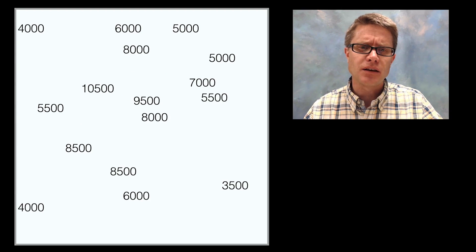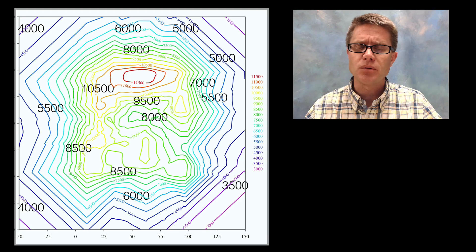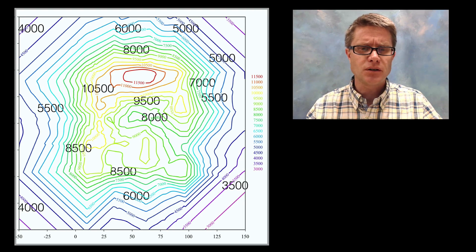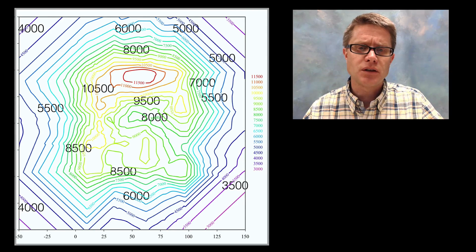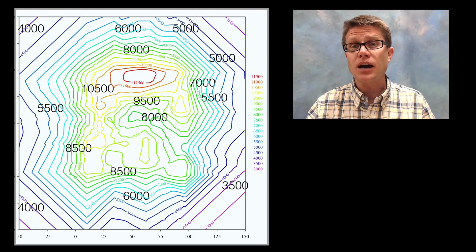But if I were to connect a lot of these with what are called iso lines, where we're seeing they're the same value, then you start to see an image here. And so this would be a topographic map essentially.